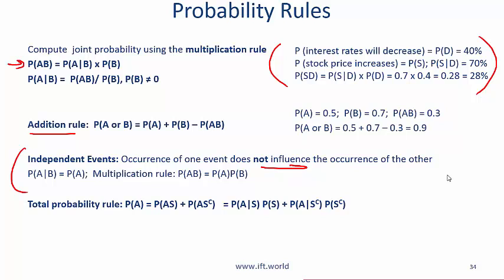Independent events, occurrence of one does not influence the other. So we have talked about this and then for independent events the multiplication rule becomes this. So if I have a die and I roll it once and then I roll it again, are those two events independent? Yes, because the first roll has nothing to do with the second roll. So if the first event is getting a 6 and the second event is getting a 6, what's the probability? It is 1 over 6 multiplied by 1 over 6.